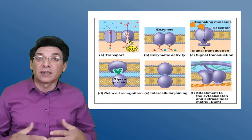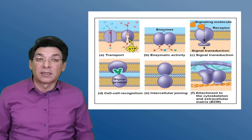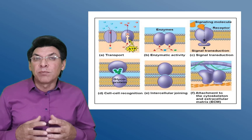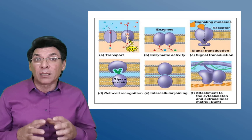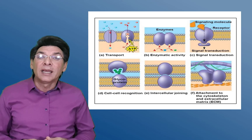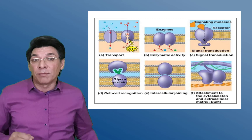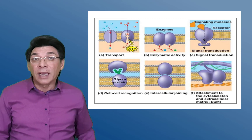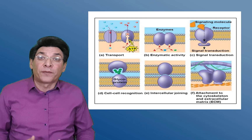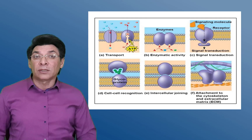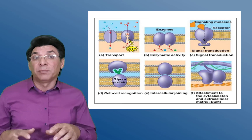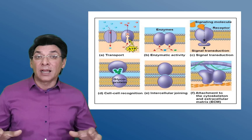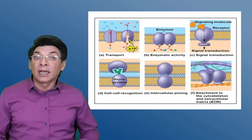The next type of proteins are glycoproteins. As mentioned, the prefix 'glyco' means glucose, so a glycoprotein is a small amount of carbohydrate or sugar attached to a large amount of protein. Glycoproteins are also found on the external surface of the plasma membrane and act as cell markers for identification and communication between cells.